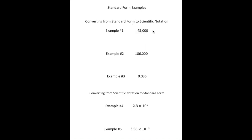Let's say we have the number 45,000 and we want to write it in scientific notation. Right now 45,000 is written in standard form. For our a value, we put a decimal point between the four and the five, making it 4.5. Then we ask: 10 to what power? To go from 4.5 to 45,000, we multiply by 10 four times, so it's 4.5 times 10 to the fourth power.